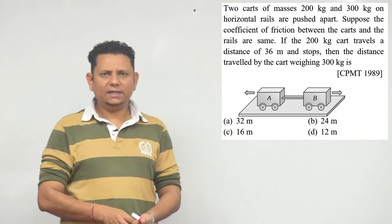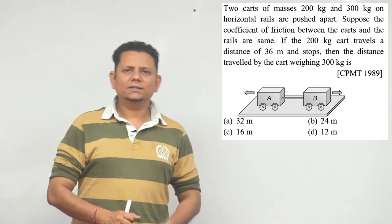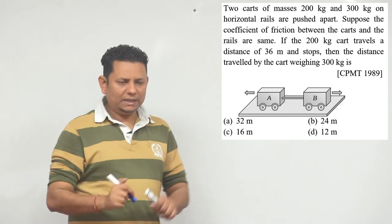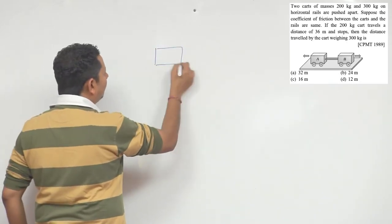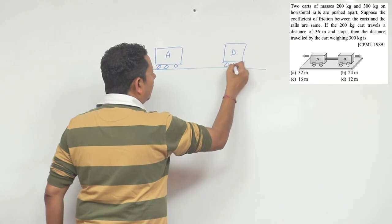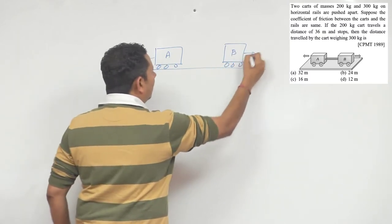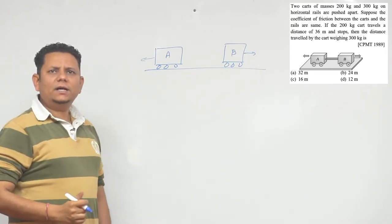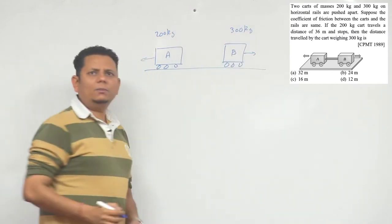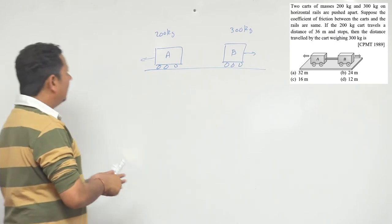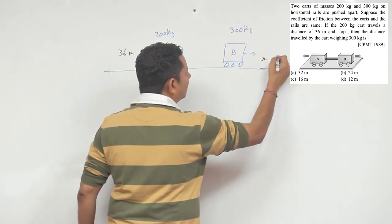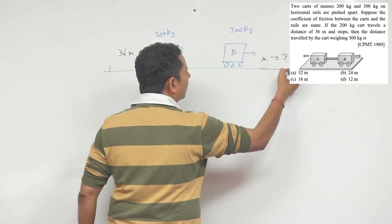So I will explain the condition to you. They are pushed apart - this one travels 36 meters and stops here. The question is, this x - how much will it travel in this direction? What will be the value of x? This we have to find out.